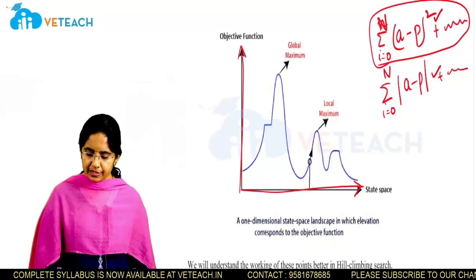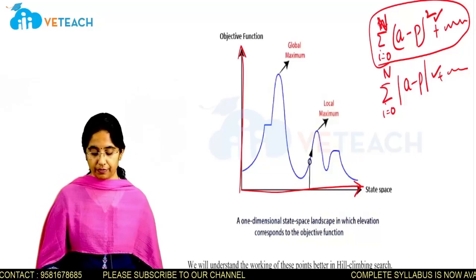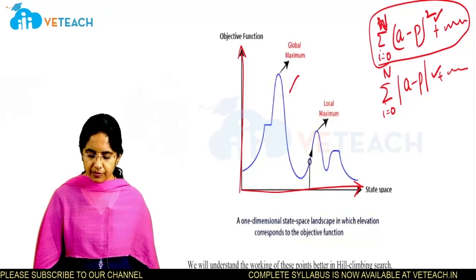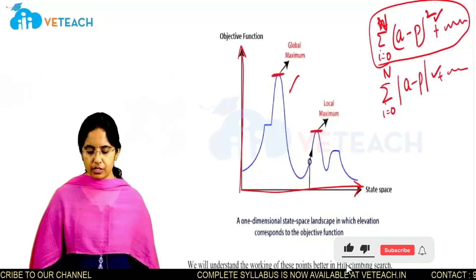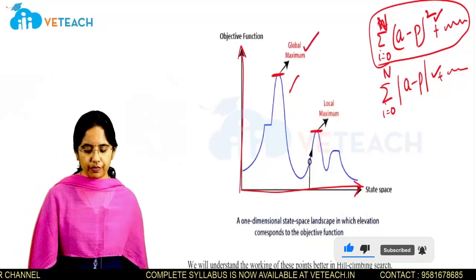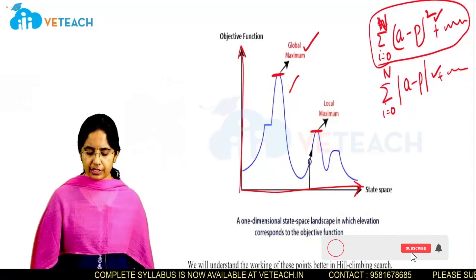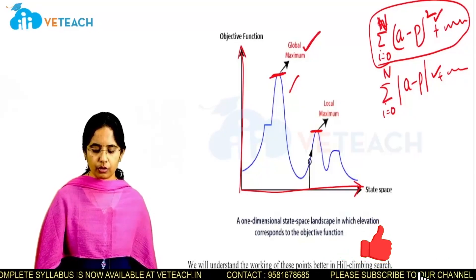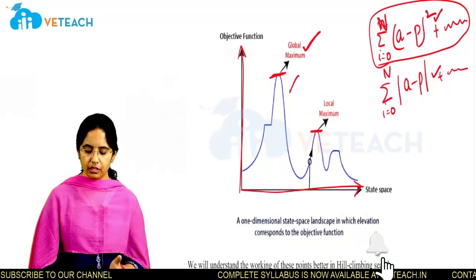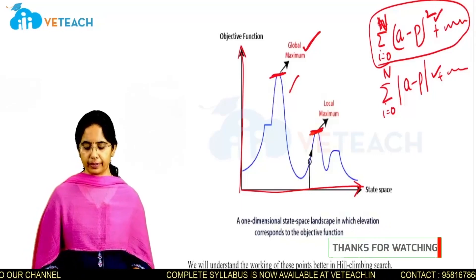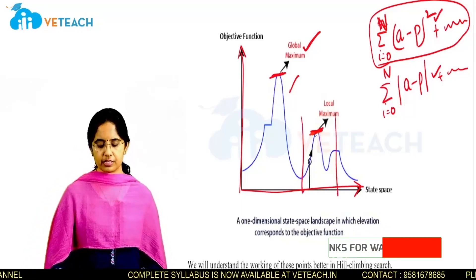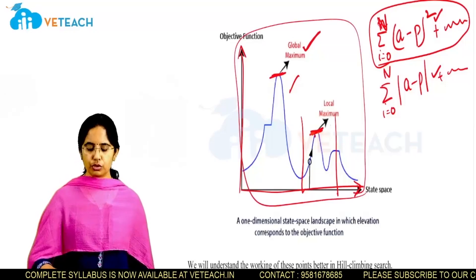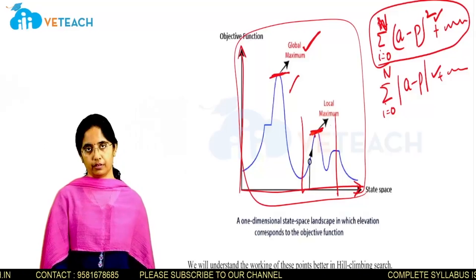If we represent the entire search space with values of the objective function, we get a curve with ups and downs — peaks and troughs. If there are multiple ups and downs, we need to find the global maxima or global minima. In a maximization problem, we use the term global maxima. If there is only one peak in a region, that is the local maxima; considering the entire graph with multiple peaks, the highest is the global maxima.